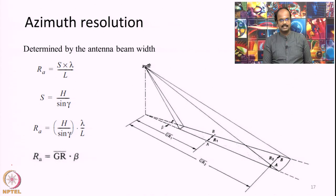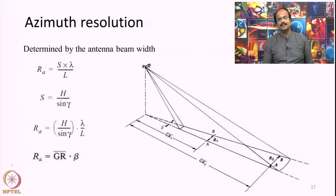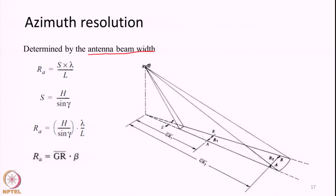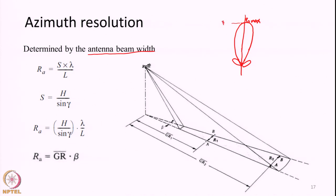Next, we discuss azimuth resolution — the resolution in the azimuth direction, along the direction of flight. This depends on antenna beam width. When we discussed passive microwave radiometry, I showed you this kind of antenna pattern. An antenna is a highly directional element that transmits or receives radiation from one particular direction. There will be a primary direction in which maximum power is concentrated, and the antenna receives its primary or maximum power capacity along this direction.